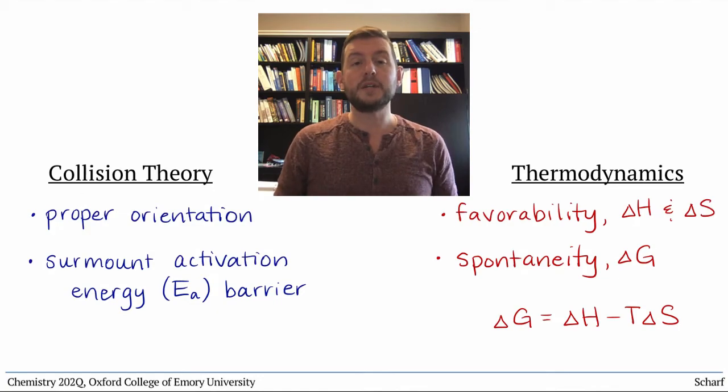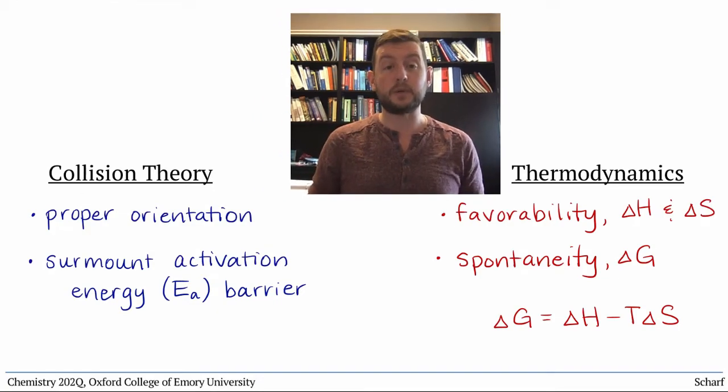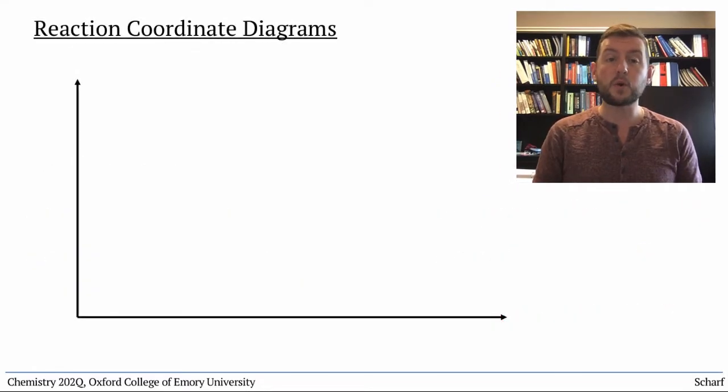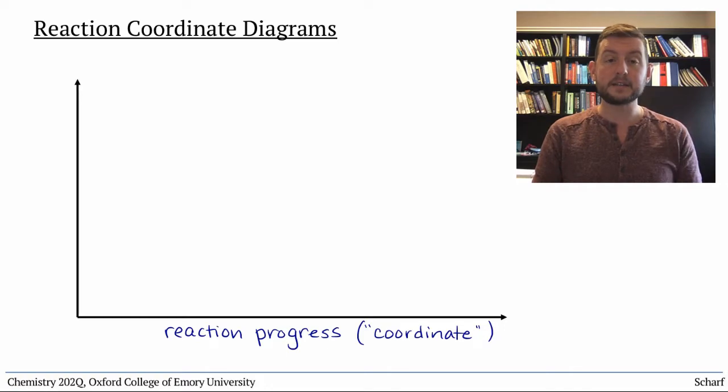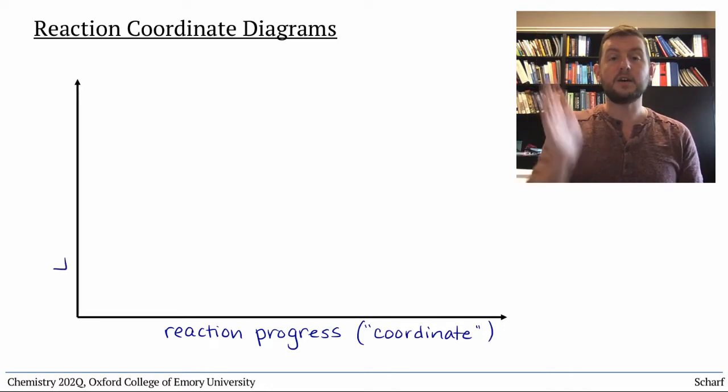These concepts all come together in an extremely important tool that chemists use frequently, reaction coordinate diagrams. These are graphs that show reaction progress, or the reaction coordinate on the x-axis, and energy on the y-axis.